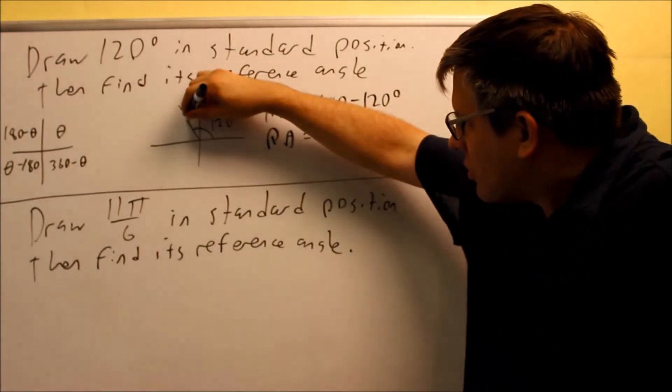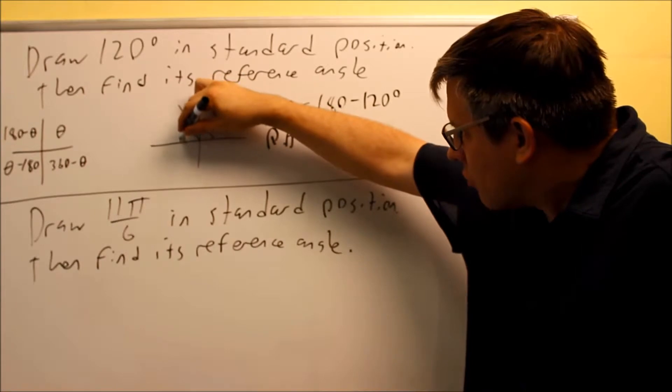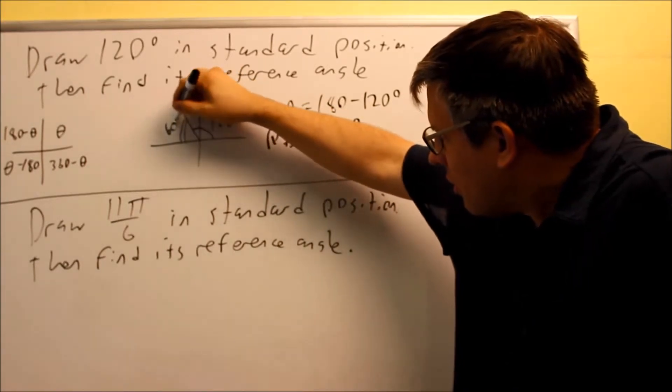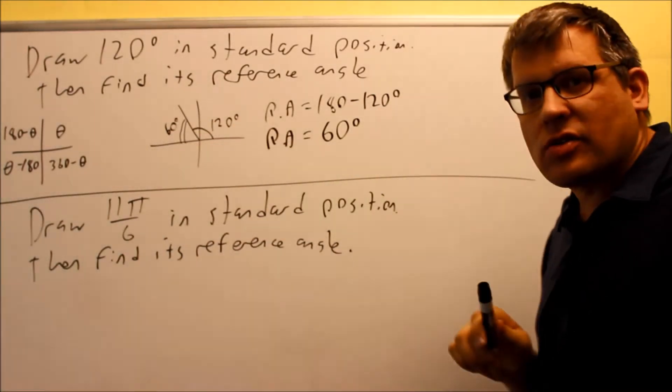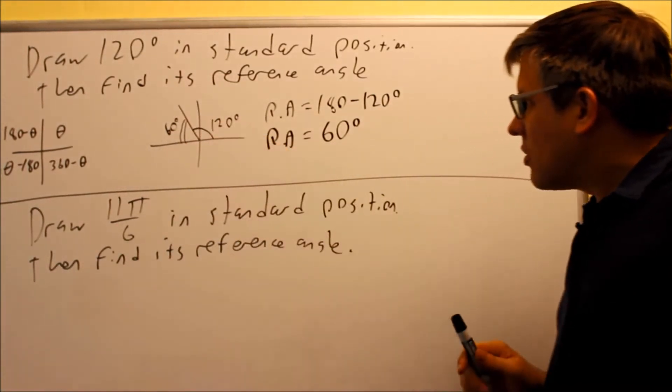So what is 60? That's this angle right here. So this right here is going to be the 60 degrees, that's going to be your reference angle. It's the measurement from the angle to the closest x-axis, that's going to be 60.